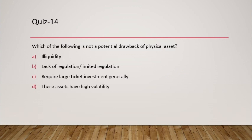Question 14: Which of the following is NOT a potential drawback of physical assets? Illiquidity is a key concern, lack of regulation is valid, and requiring large ticket investment is also true for physical assets like houses. However, the statement that these assets have high volatility is not true — physical assets generally do not see huge price volatility, unlike financial assets. The answer is D.